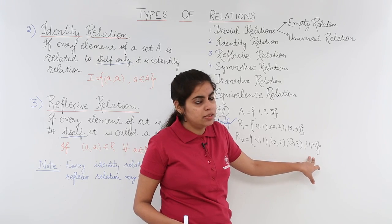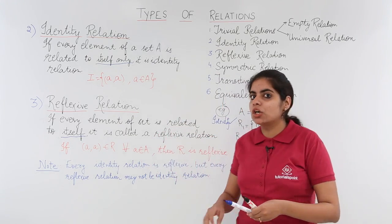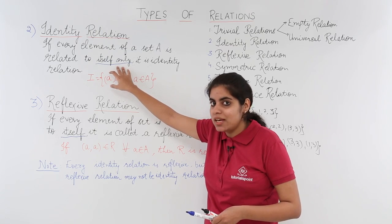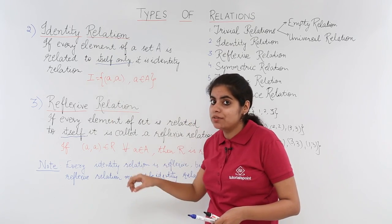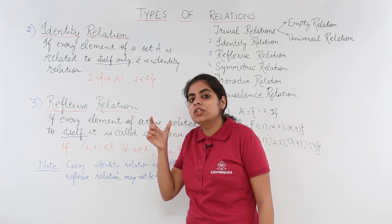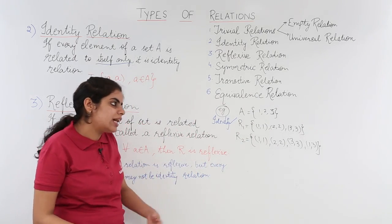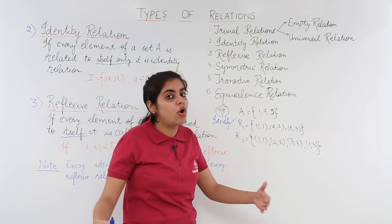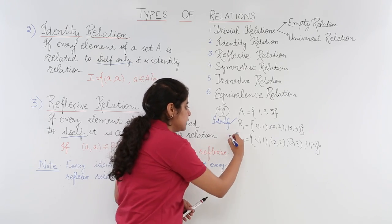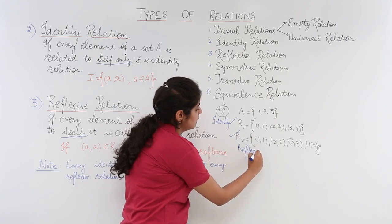Now, can this be an identity relation? No, not at all, because in an identity relation elements should be related to themselves only — nothing extra. But yes, in a reflexive relation elements are related to itself, and we did not see the word 'only' there. That means there can be something extra present, provided all elements are related to themselves. So yes, relation R2 is an example of a reflexive relation.